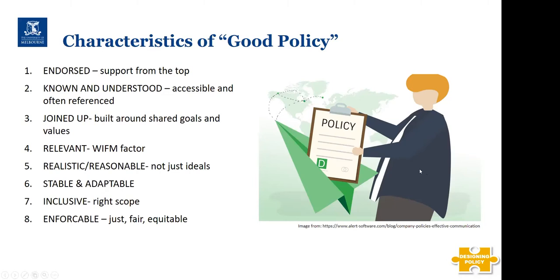Policy also needs to be stable and adaptable — another oxymoron, but by stable I mean it should not need updating regularly and should last a few years, usually achieved by not being too specific. Adaptability comes in the procedures and processes underneath, where specificity lives and where things can be changed very regularly. With broader statements in the policy, the level below can provide the specific detail that changes frequently.